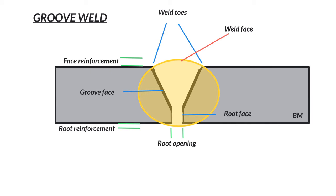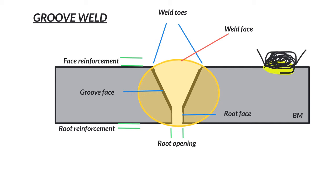Starting at the top, we have welding toes — the toes are the edges of a bead. Let's say we run a bead on a piece of metal. This edge and this edge are the welding toes. You'll hear us say let the toes tie in — you want to make sure they tie in. We are not looking for beads that kind of just sit at the top of the metal like a lump. We want to make sure everything ties in, and we can do that by technique and by settings — proper amperage and everything else.